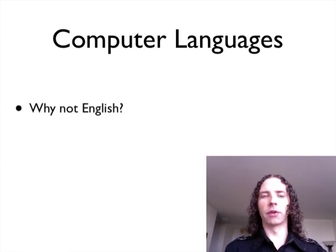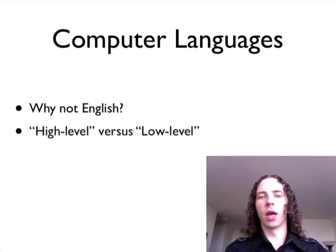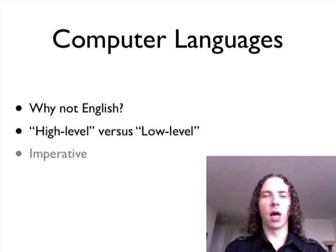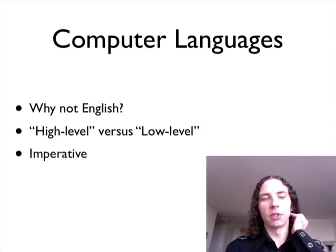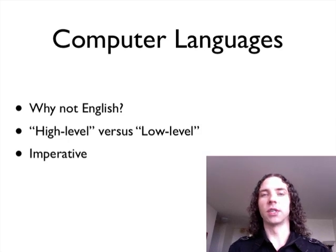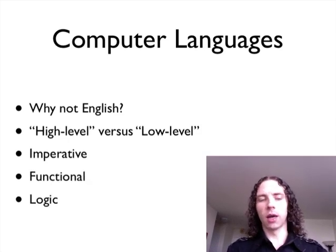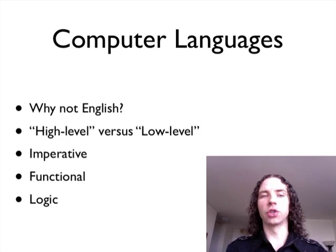So, we're going to go through a few things here. First of all, why do they exist? Why can't we just program in English? What are the terms high-level and low-level? What do those mean? Because developers will use those a lot. And then we're going to talk about some specific kinds of programming languages, such as imperative languages, functional languages, and something kind of related to functional, which is logic languages.